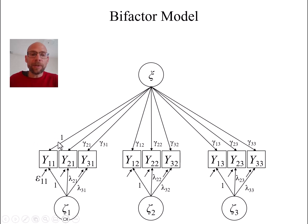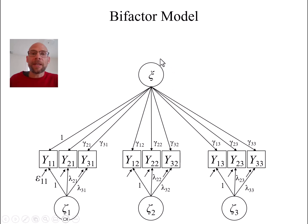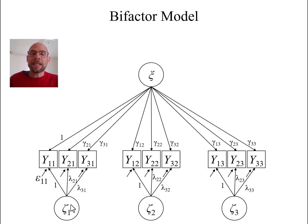You could have multiple indicators for each rater — say three different raters for each target, each rating teaching quality on three items. Then using this model you can examine to what extent the ratings converge in the assessment of teaching quality. The general factor would capture convergent validity among ratings, while the specific factors would indicate rater specificity or method effects — the unique aspect of each rater's ratings not shared with others.